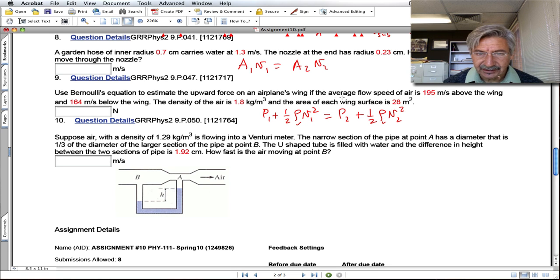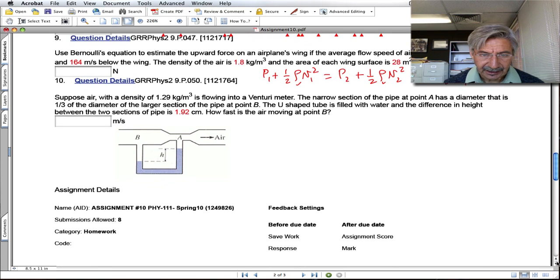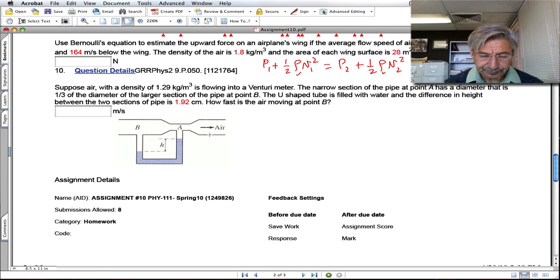If one is above the wing, this will be 195 meters per second. So P₂ has to be greater than P₁ because this is greater than that. That's why you get the lift. This one is also an application of this equation up here.